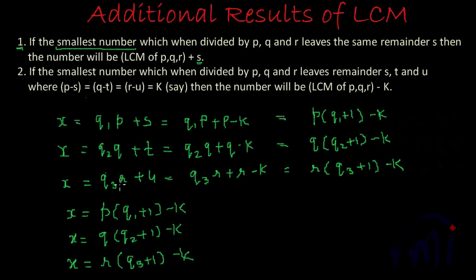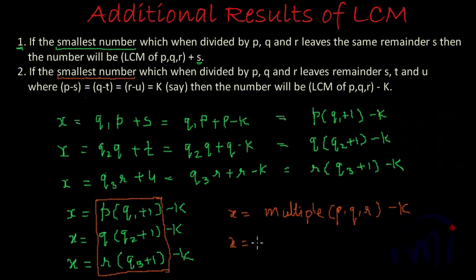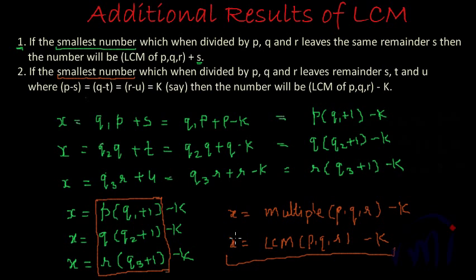From this we conclude that X is a multiple of P, Q and R, minus K, where K equals P − S or Q − T or R − U. So the value of X is a multiple of P, Q, R minus K. Since we want the smallest such number, X equals LCM of P, Q and R minus K — and this is our second result.